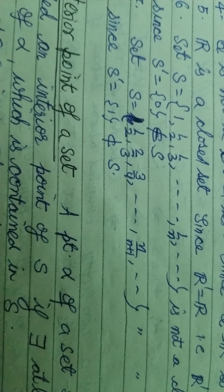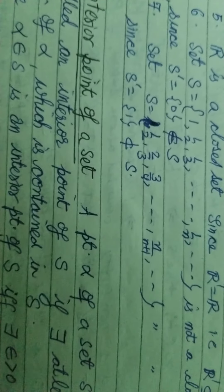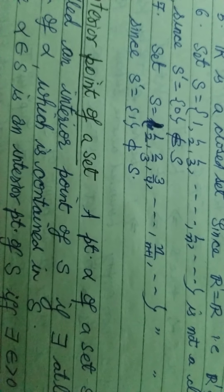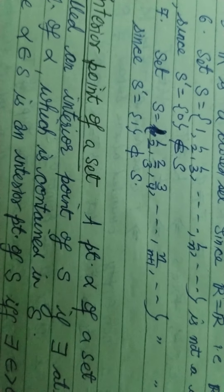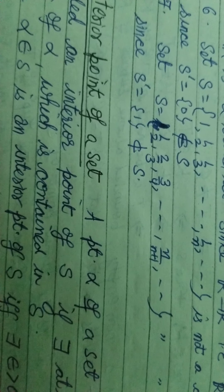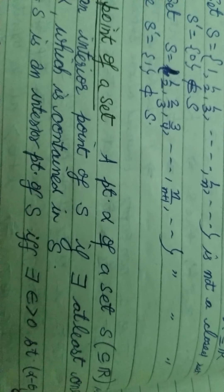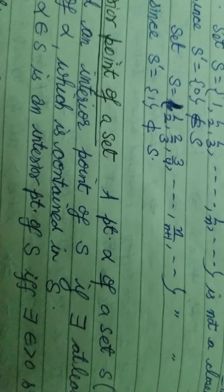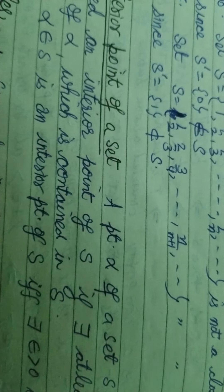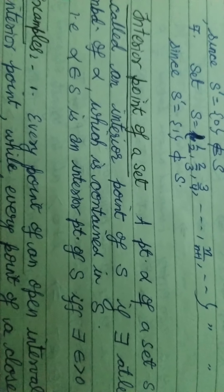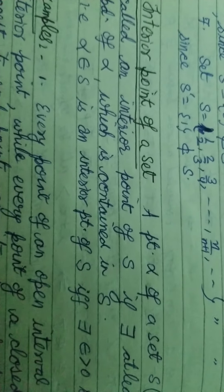Consider the set S = {1, 1/2, 1/3, ..., 1/n}. This is not a closed set since S' = {0}, because its limit point is 0, and 0 does not belong to the set. Similarly, the set {1/2, 2/3, 3/4, ..., n/(n+1)} is also not a closed set because its limit point is 1, which does not belong to the set, so it is not contained in the set.